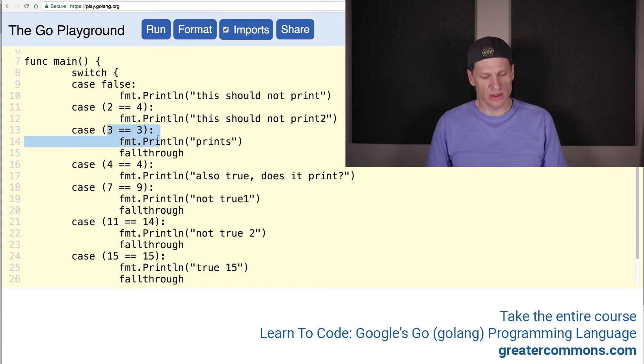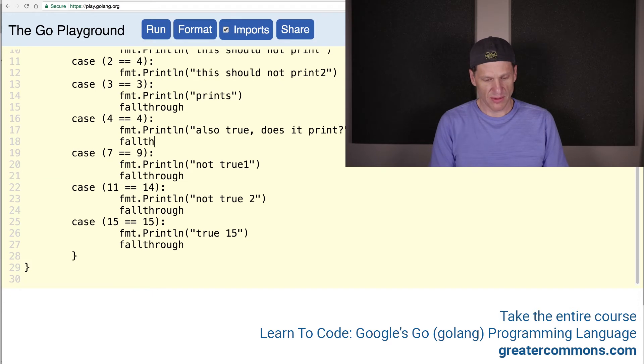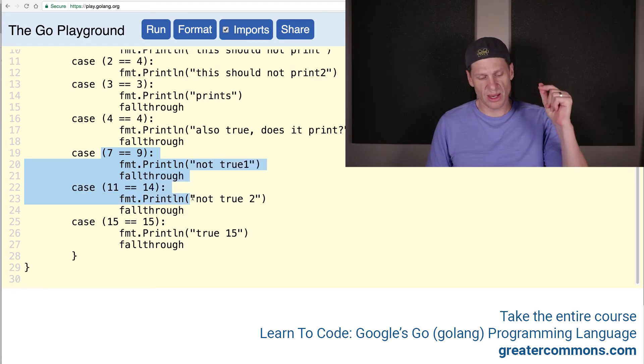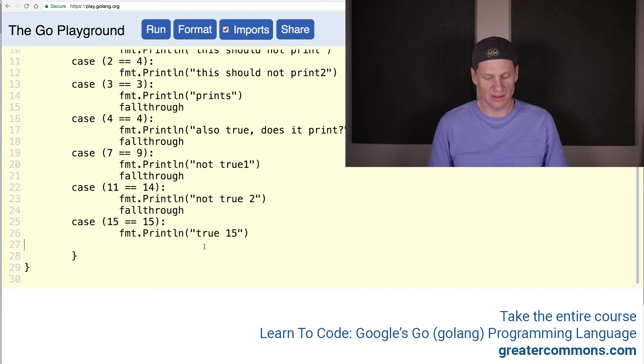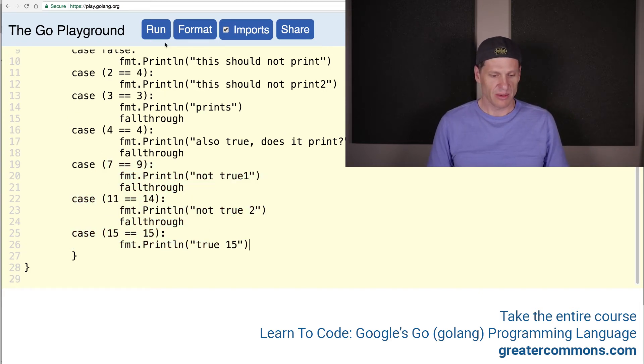So now this one's going to evaluate as true. It'll fall through. This will evaluate as true. It will fall through. And this one will evaluate as false. And it'll print. And then this one will evaluate as false. And then it'll print. And this one will evaluate as true. And it'll print. We don't need to fall through. There's nothing to fall through to. I'm going to run it.